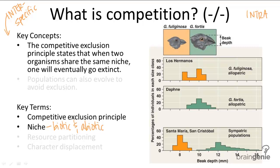Living in the same niche means that two populations of organisms share the exact same resources. When this happens, one organism population will always have some biological advantage over the other — whether they are stronger, swifter, faster, or more adapted to the niche. Over time, that more adapted organism population out-competes the other.